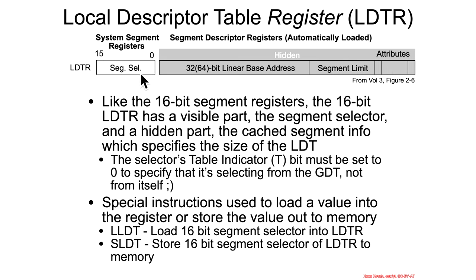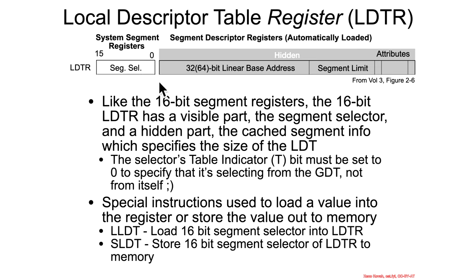The segment selector itself, because it has a table indicator bit, the table indicator bit must always point at zero to say it selects from the GDT, because the LDTR is how you find the LDT. So you can't have a self-referential thing saying I'm the LDTR and I point at the LDT, because otherwise you wouldn't be able to find the LDT.